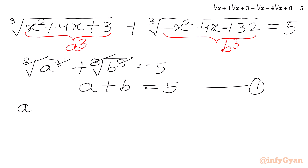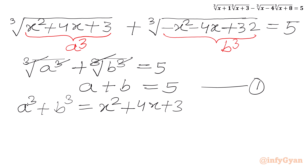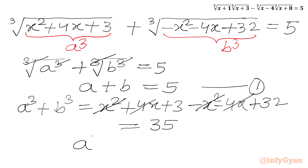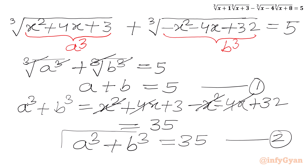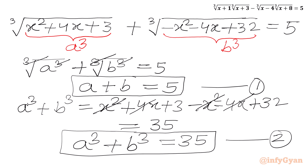Now we will find out the value of a³ plus b³. So a³ is x²+4x+3, and b³ is -x²-4x+32. Adding them: the x² terms cancel, the 4x terms cancel, and 3 plus 32 is 35. So a³ plus b³ equals 35. This is equation 2. Our system of equations is: a+b=5 and a³+b³=35.